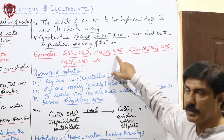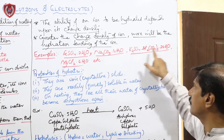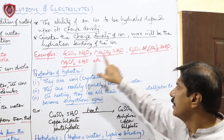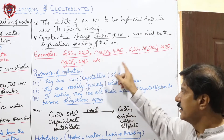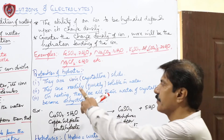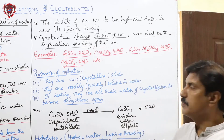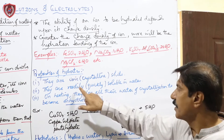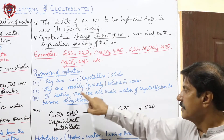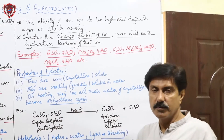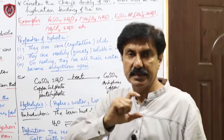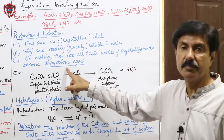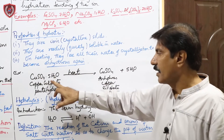Hydrates کی مثالیں: ferrous sulfate heptahydrate، sodium carbonate decahydrate، alum (K₂SO₄·Al₂(SO₄)₃·24H₂O)، potassium magnesium chloride hexahydrate۔ Hydrates کی properties: یہ سب crystalline solids ہیں، ionic nature کے؛ پانی میں فوری حل ہو جاتے ہیں؛ کسی بھی hydrate کو گرم کرنے سے water of crystallization نکل جاتا ہے اور وہ دوبارہ anhydrous form میں آ جاتا ہے۔